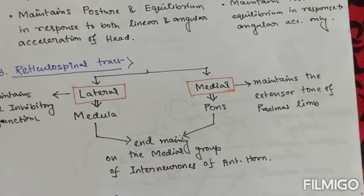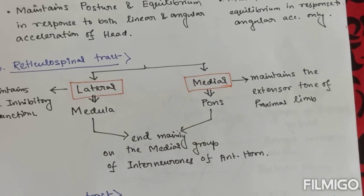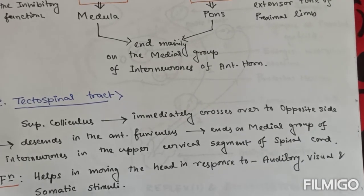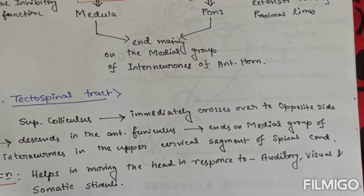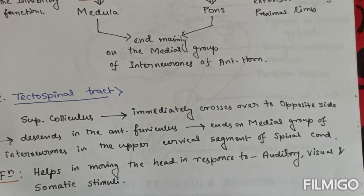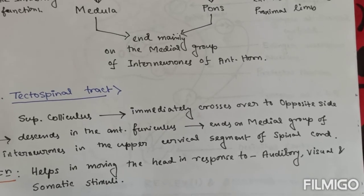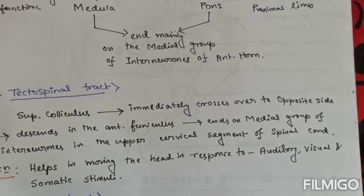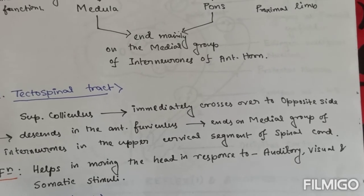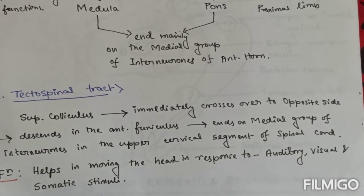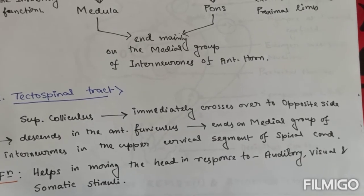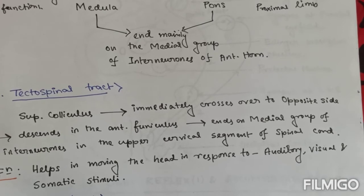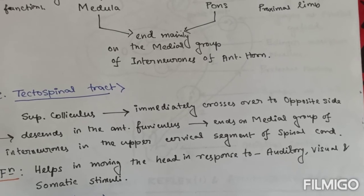The medial reticulospinal tract maintains the extensor tone of the proximal limbs. Next, the tectospinal tract originates from the superior colliculus, immediately crosses to the opposite side, and descends in the anterior funiculus. It ends on the medial group of interneurons in the upper cervical segment of the spinal cord. It helps in moving the head in response to auditory, visual, and somatic stimuli.